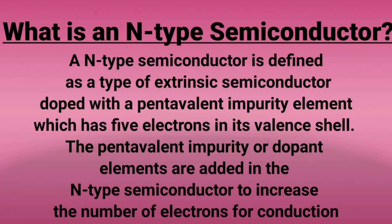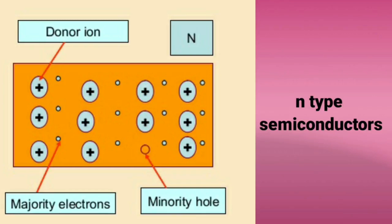In the N-type semiconductor diagram: major carriers are electrons and minor carriers are holes. This is because we add a pentavalent impurity, also called a donor impurity. The donor ion has five valence electrons, with four forming bonds, leaving one free electron. So in N-type semiconductors, major carriers are electrons and minor carriers are holes.